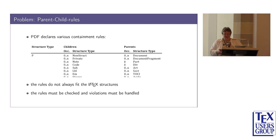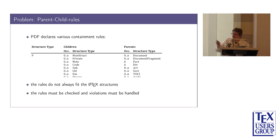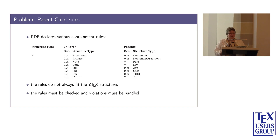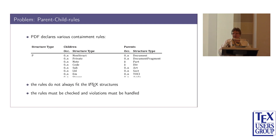The next problem is parent-child rules. PDF contains lots of rules about which structure is allowed inside which structure — you can't do a P inside a P, but you can put a Span in a P. At the beginning of the Tag PDF project, we simply handled this manually, but it didn't work out in the long run. So now there are implemented automatic tests which check every time you add a structure whether it's allowed, and give you warnings. Avoiding rule violations is not always trivial because the PDF model is not identical to the LaTeX model.